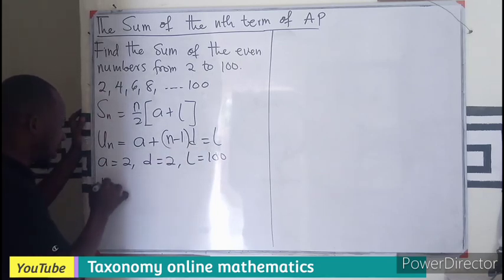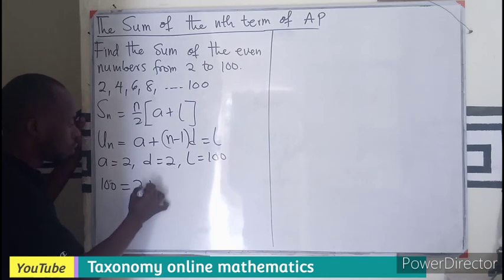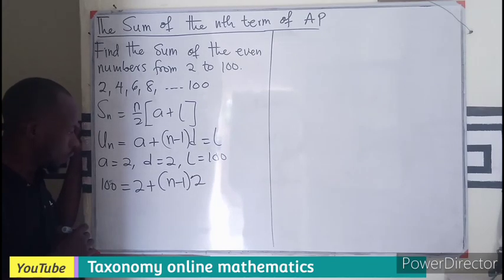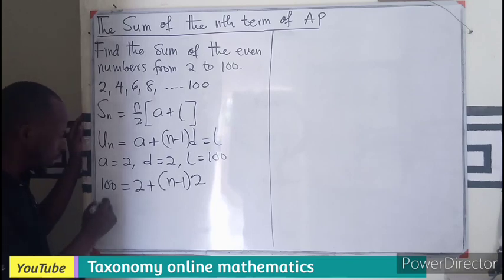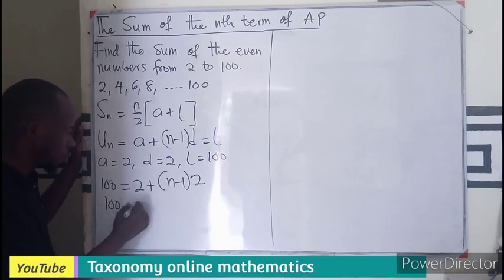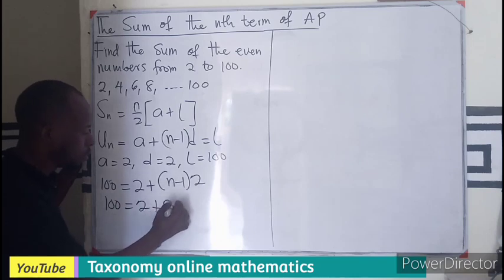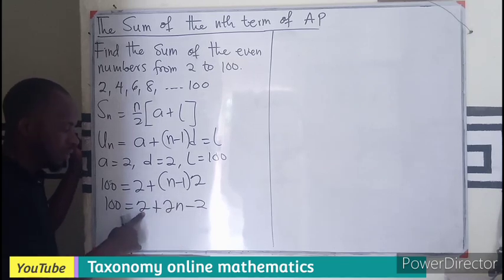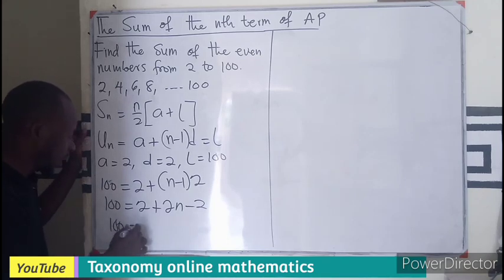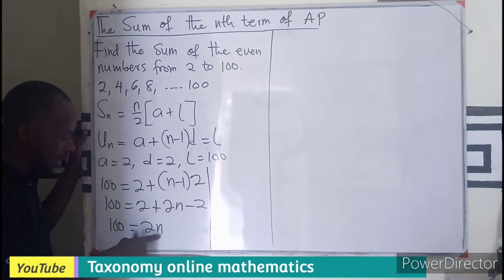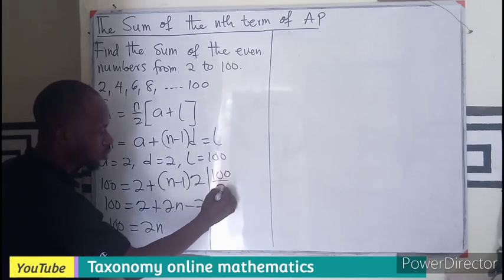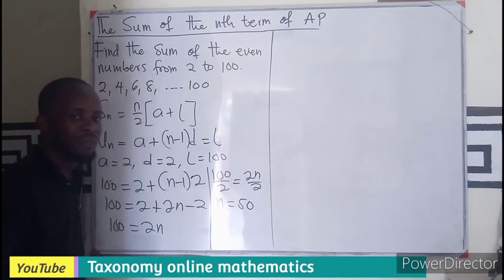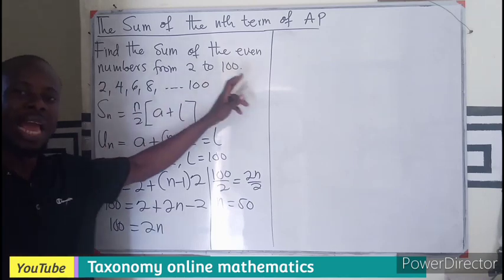This is going to be 100 equals to a, which is 2, plus (n minus 1) times d, which is also 2. So per our calculation, we're having 100 equals to 2 plus 2n minus 2. I believe per this we are going to have 0 because 2 minus 2 is 0. So 100 equals to 2n. So 100 over 2, 2n over 2, so n will be definitely 50. It means there are 50 different terms present here.